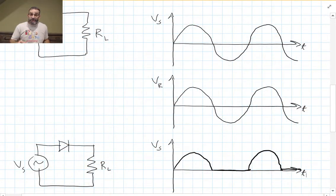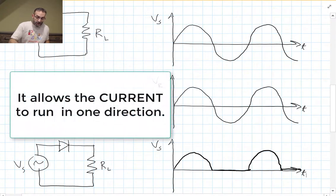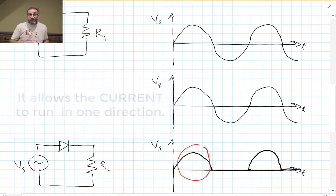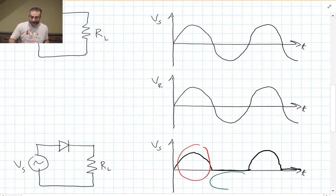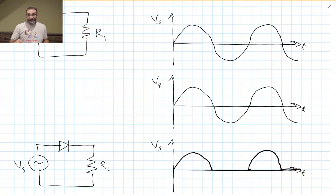If we add a diode, that one-way valve for current flow, it allows the voltage to run in one direction through the resistor, but it doesn't allow it to go the opposite direction. It cuts it off and doesn't allow it to go in the opposite direction. So at least now we only have current flowing in one direction. But this doesn't look like constant current, does it?